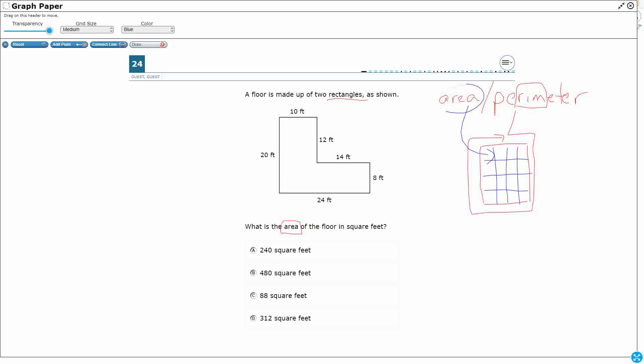So the area is the inside, the perimeter is the outside. Let's say we're really not sure which is which. What happens if we add up the perimeter of this? So we add up the 10 and the 20 and the 24 and the 8, 14, and the 12.